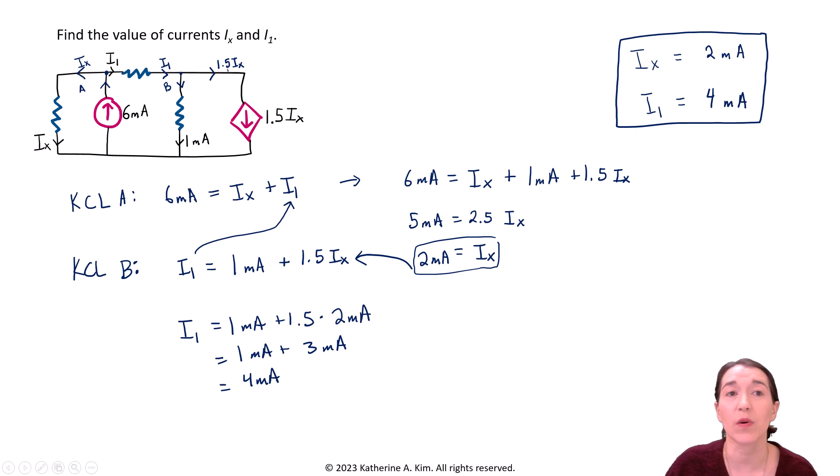And the amount going through here is going to be 1.5 times Ix, which is 2 milliamps. So 3 milliamps will be flowing through here. Everything adds up in our circuit. And we only had to use Kirchhoff's current law applied two times to solve for two unknown variables. In this case, the currents in our circuit. So that's how we can find our answer and solve this circuit.